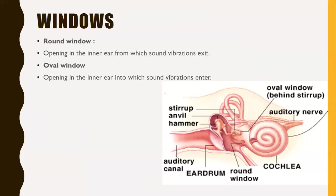The windows are mainly of two types: round window and oval window. The round window is an opening in the inner ear from which sound vibrations exit. The oval window is the opening in the inner ear into which sound vibrations enter. In this picture you can see the oval window and the round window. Through the oval window, sound vibrations enter, and through the round window, sound vibrations exit.